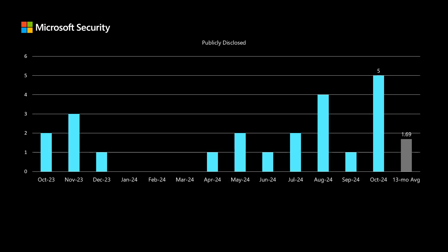As I mentioned, the CVSS score is a starting place when we talk about risk — it does not contain everything when we talk about risk factors associated with a vulnerability. One of those things the CVSS score doesn't cover is publicly disclosed vulnerabilities. This month we have five; we've been averaging a little over one and a half per month.